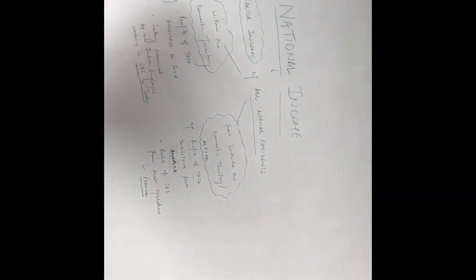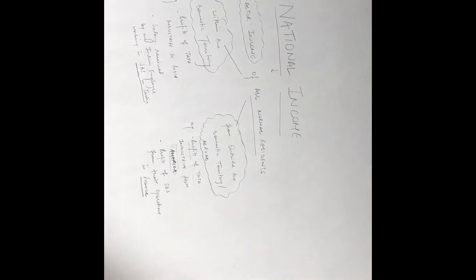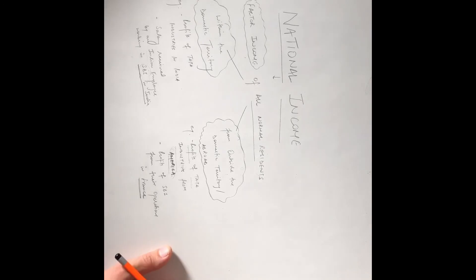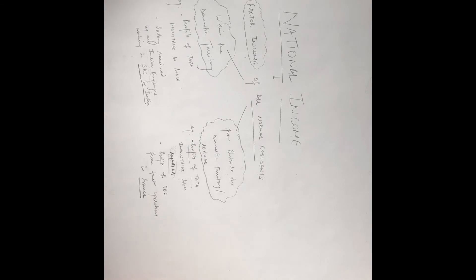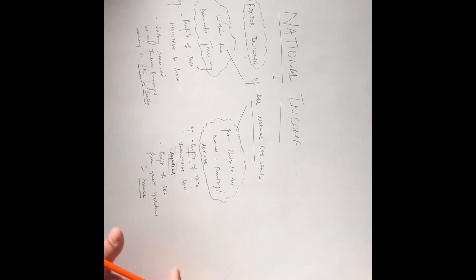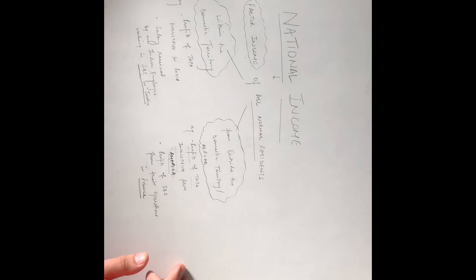So national income is simply the factor income received by all normal residents, whether they receive it within the domestic territory or from outside the domestic territory. You should now be clear on the difference between domestic and national income. I will be adding a worksheet along with this video which will have cases asking whether something is part of domestic or national income and the reason behind it. You can comment your doubts or contact me via WhatsApp.